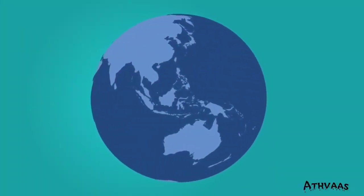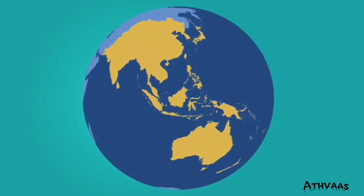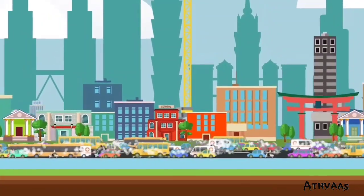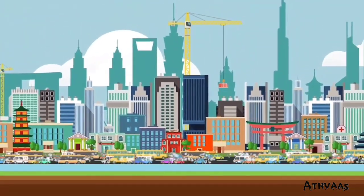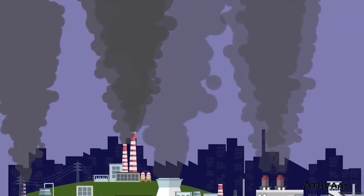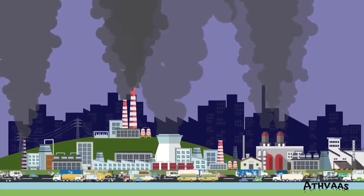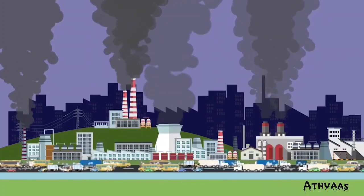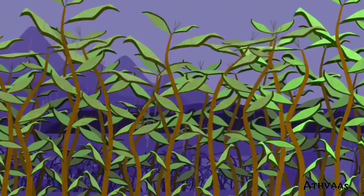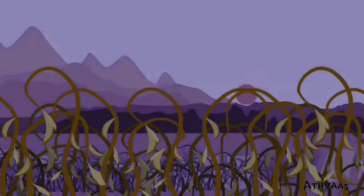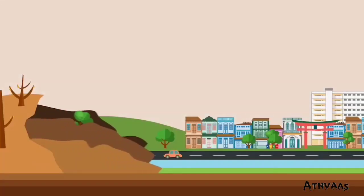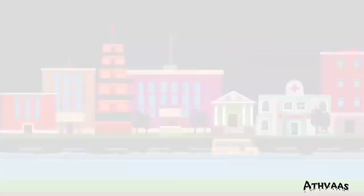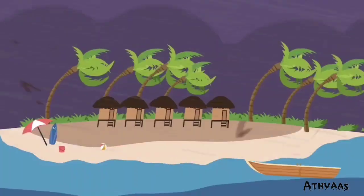The Asia Pacific region is the fastest growing region in the world. There has been massive urbanization and huge job growth over the last few decades, leading to massive demand for resources and land. However, the region is also the largest emitter of greenhouse gases, which has led to climate change affecting humans and natural resources.